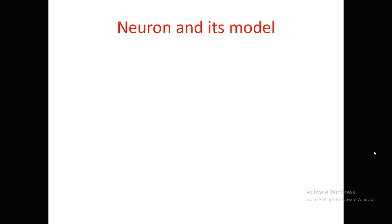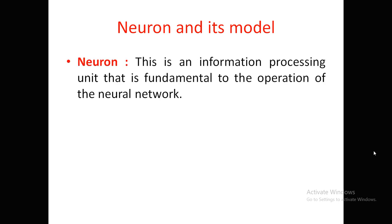An artificial neuron is an information processing unit that is fundamental to the operation of a neural network. It is the smallest part of a neural network. Once we join all these neurons in a proper manner and apply some algorithm, we will get the proper result.